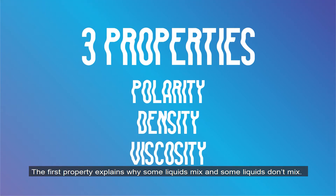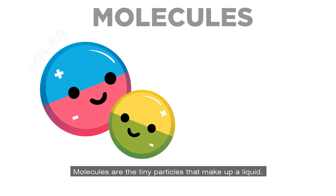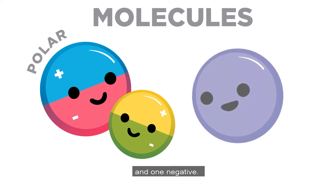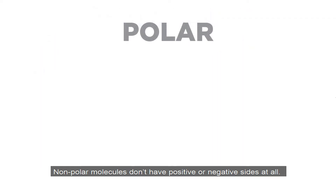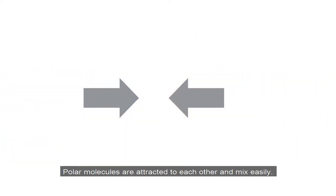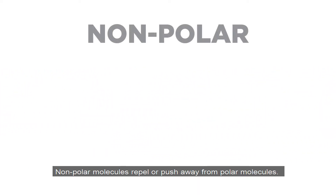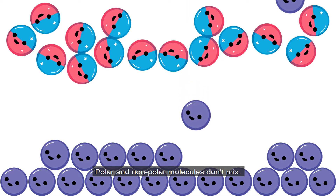The first property explains why some liquids mix and some liquids don't mix. Molecules are the tiny particles that make up a liquid. Polar molecules have two sides, one positive and one negative. Nonpolar molecules don't have positive or negative sides at all. Polar molecules are attracted to each other and mix easily. Nonpolar molecules repel or push away from polar molecules. Polar and nonpolar molecules don't mix.